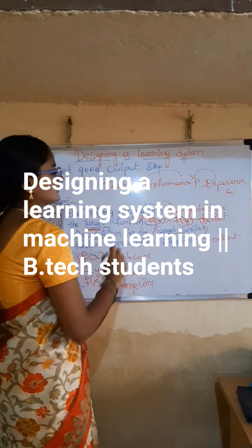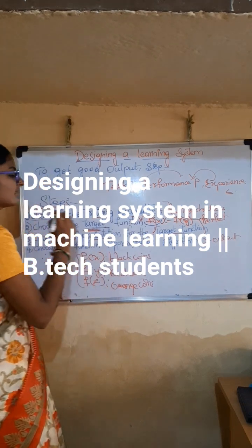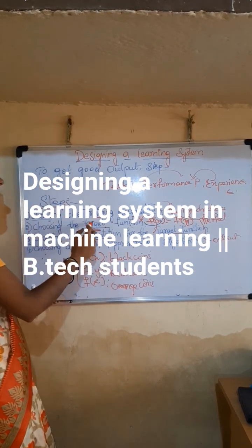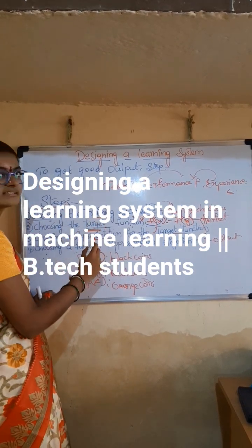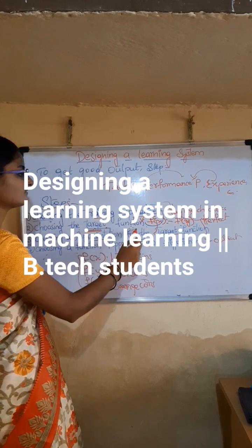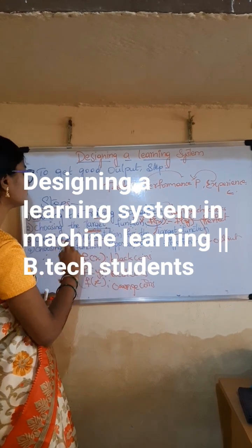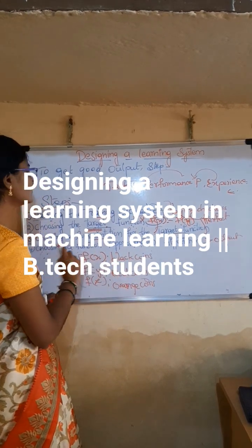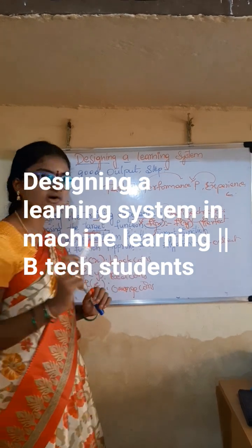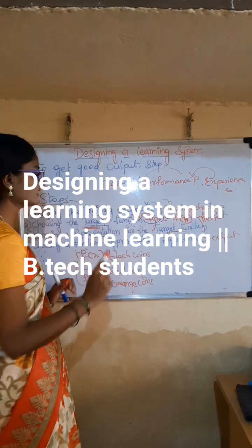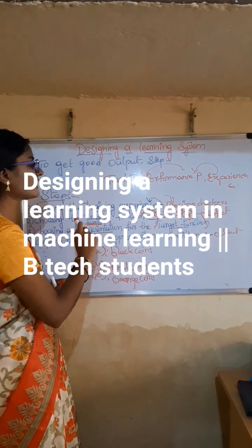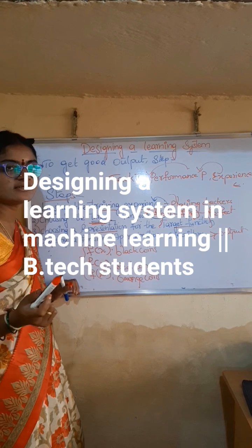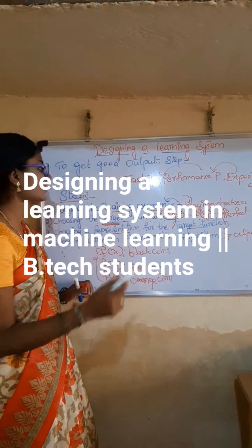The steps are: choosing the training experience, choosing the target function, choosing a representation for the target function, and choosing a function approximation algorithm. These are the four steps to design a good result or good output.